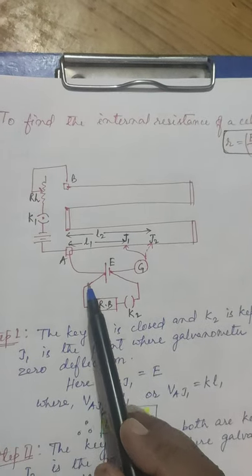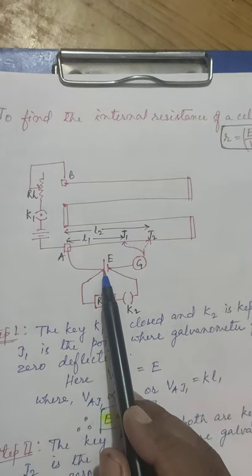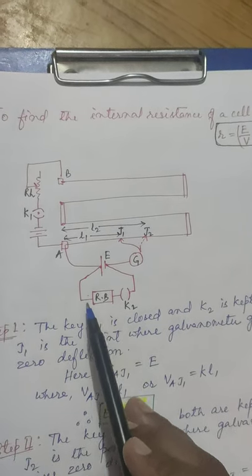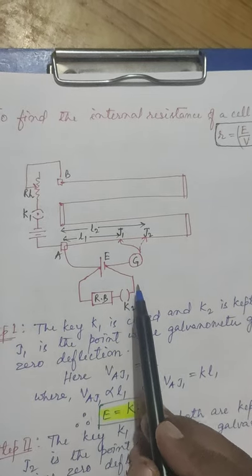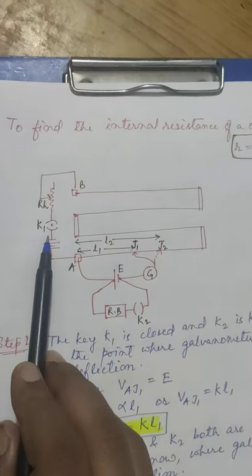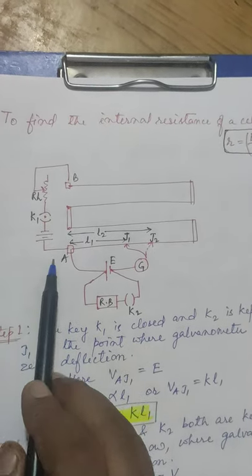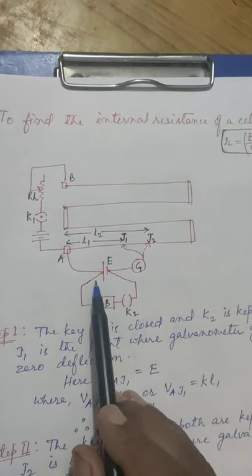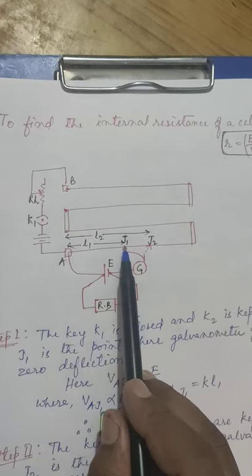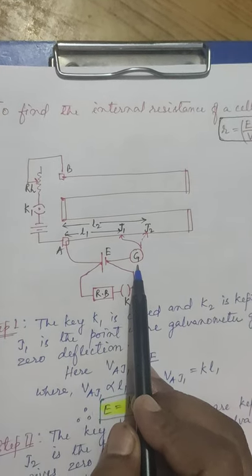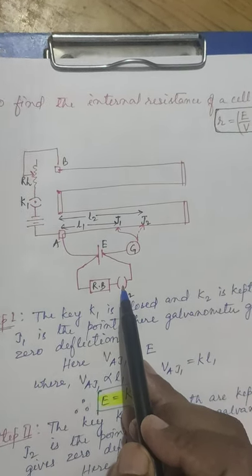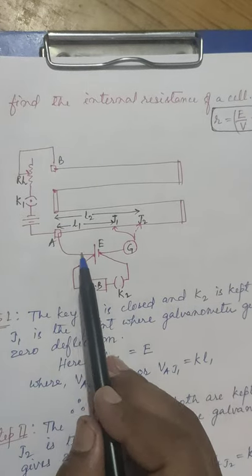An external circuit is also connected to the cell. From its positive terminal, a resistance box providing appropriate variable resistance is taken, along with a key K2, connected to the negative terminal. In the first step, we close key K1 so current flows through the potentiometer, but K2 is kept open so that no current flows in the external circuit of the cell.